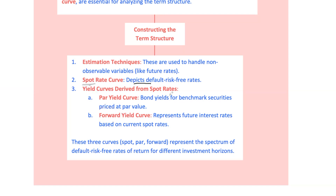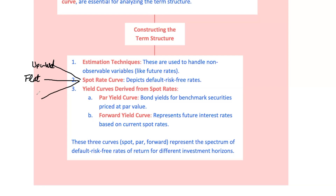Think of spot rates as the purest form of interest rates. These are the default risk-free rates for zero-coupon bonds that don't pay any interest until they mature. It's like buying a $100 gift card today for $95 — you don't get anything until it matures, but you know exactly what you're getting. The spot curve shows yield to maturity on the x-axis against time to maturity on the y-axis. The curve's shape can vary: upward sloping (normal), where long-term yields are higher than short-term; flat, signaling stability or uncertainty; or inverted, where short-term yields are higher — often a warning sign of expected lower rates in the future, think recession signals.